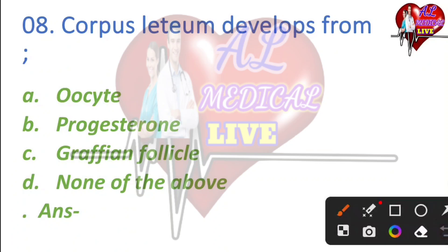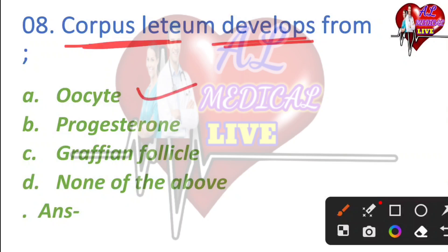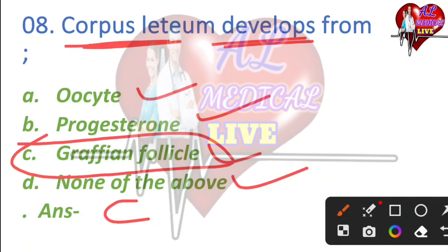Corpus luteum develops from — what is this? The options are: A) ovarian site, B) progesterone, C) Graafian follicle, D) some other option. The right answer is C — Graafian follicle. Corpus luteum develops from the Graafian follicle.